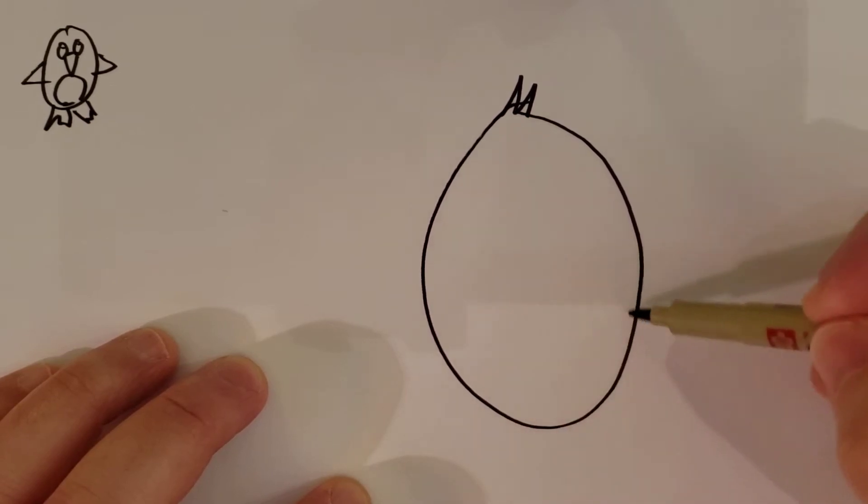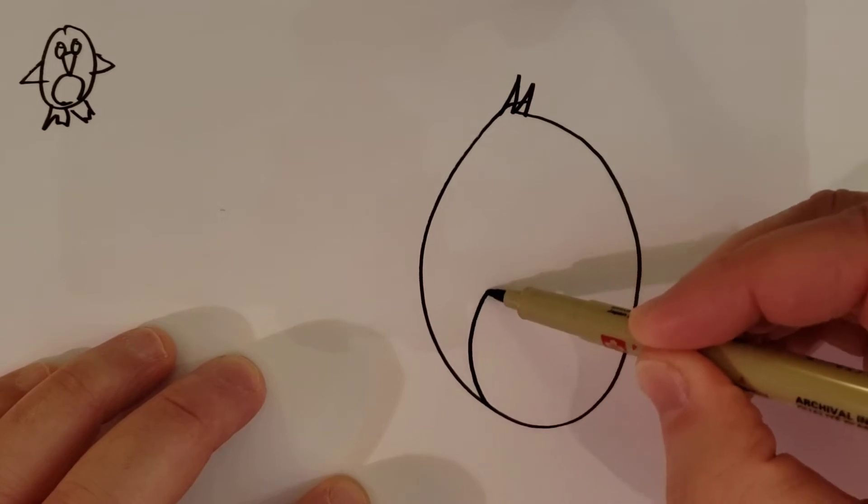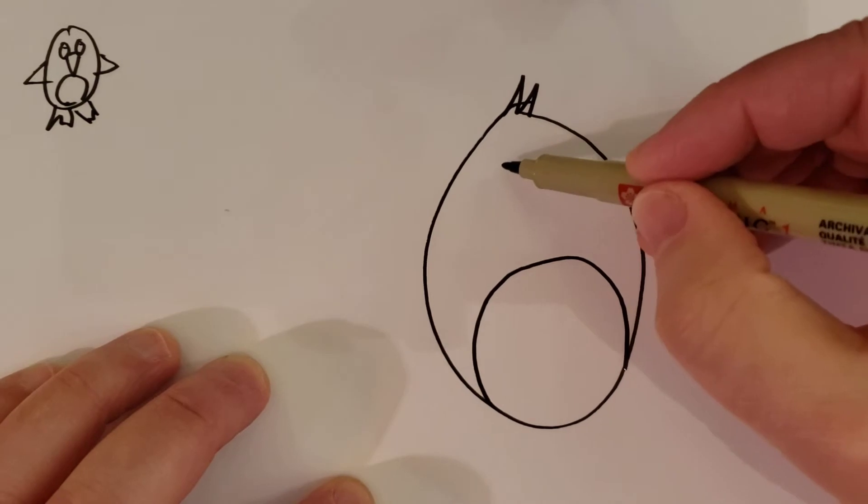To the bottom you're gonna draw an oval shape, but what's gonna happen is you're not gonna go too far up. You're gonna start here, go about halfway, and then come back down like that.